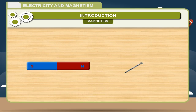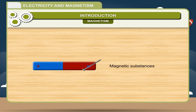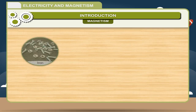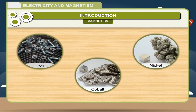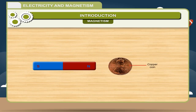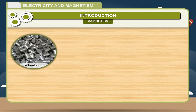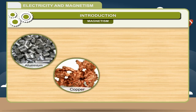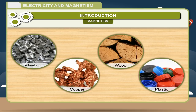The substances which are attracted by a magnet are called magnetic substances. Examples: iron, cobalt, nickel, etc. The substances which are not attracted by any magnet are called non-magnetic substances. Examples: aluminium, copper, wood, plastic, etc.